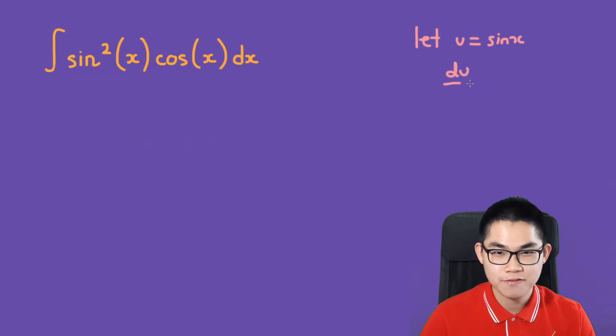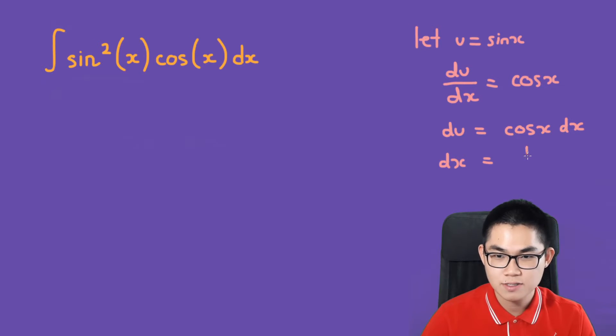We differentiate first, so we get du/dx, and the derivative of sin(x) is positive cos(x). So du = cos(x)dx, and dx = 1/cos(x) times du.